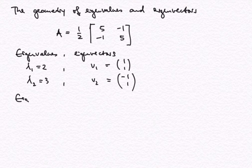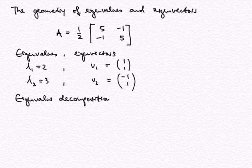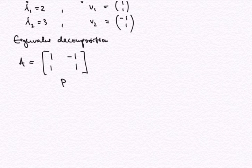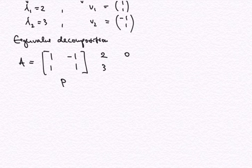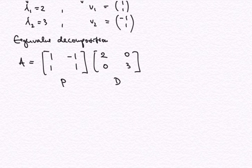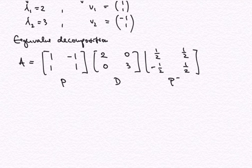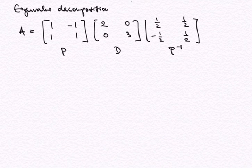So we have the eigenvalue decomposition which is the matrix P = [1, -1; 1, 1], consisting of the eigenvectors as columns, the diagonal matrix that has the eigenvalues on the diagonal, and the inverse of the matrix P, which is given by [1/2, 1/2; -1/2, 1/2], as you may want to calculate or as you may remember from the last video.